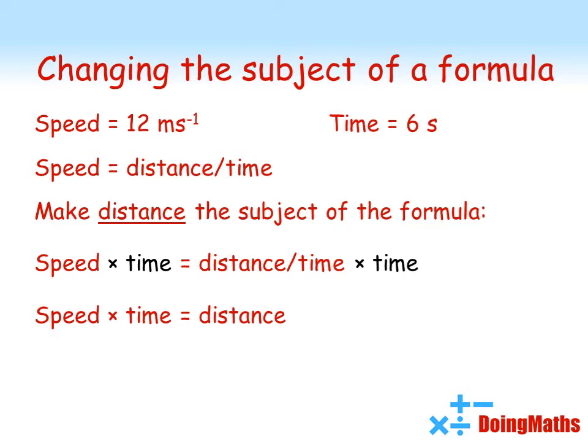We've got distance by itself, so just switching the formula around so that we've got distance on the left, we've now got distance equals speed times time. Distance is the subject because it's the one that's by itself. We can put our values of speed and time into that. Twelve times six. The distance traveled was seventy-two meters.